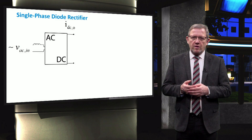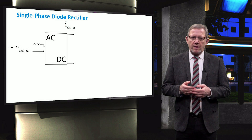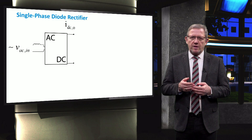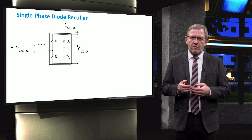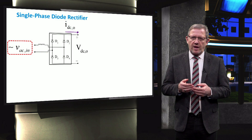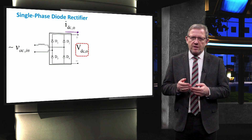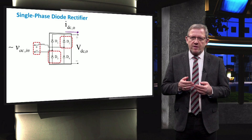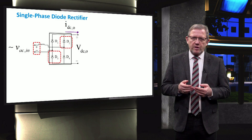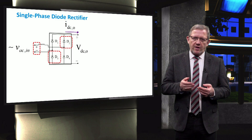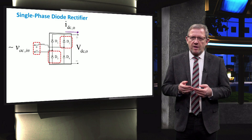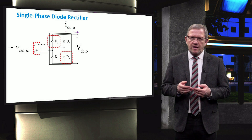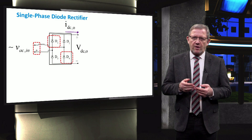Let's first start with the conversion from AC to DC in a single-phase AC system. The single-phase AC can be converted to DC voltage through a diode rectifier, which consists of four diodes and two legs. The input AC voltage is converted to the output DC voltage as shown in the figure. When the input voltage is positive, diodes D2 and D3 turn on — diodes conduct when the anode voltage is positive with respect to the cathode. When the input voltage is negative, diodes D1 and D4 conduct, therefore always a positive voltage is reflected at the DC link.